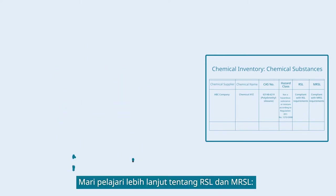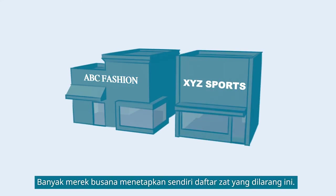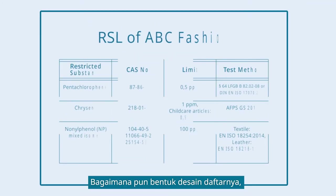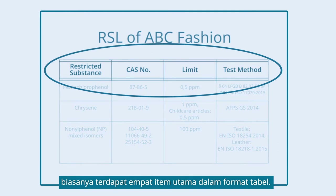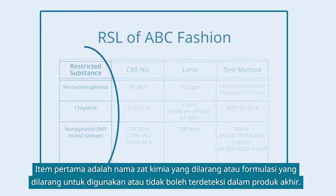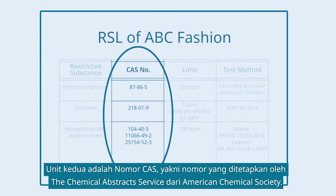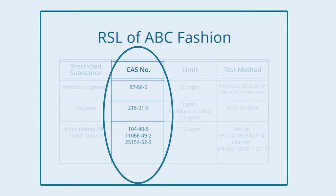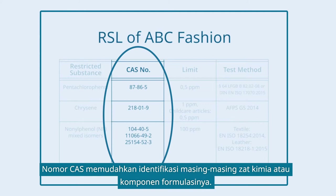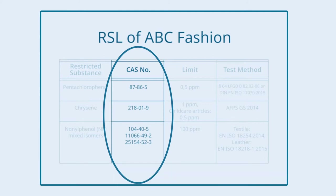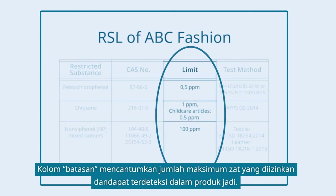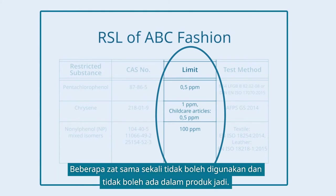Let's take a closer look at the RSL and MRSL. Many fashion brands have their own restricted substance list. No matter how different the design of these lists is, they usually show four key items in a table format. The first item is the name of the restricted chemical substance or formulation, which is restricted in use or not allowed to be detected in the end product. The second item is the CAS number — a unique number assigned by the Chemical Abstracts Service of the American Chemical Society — which helps identify the respective chemical substance or components of the formulation. The limit column shows the maximum allowable and detectable amount of that substance in the finished product. Some substances are completely banned and are not allowed to be found in the end product at all.